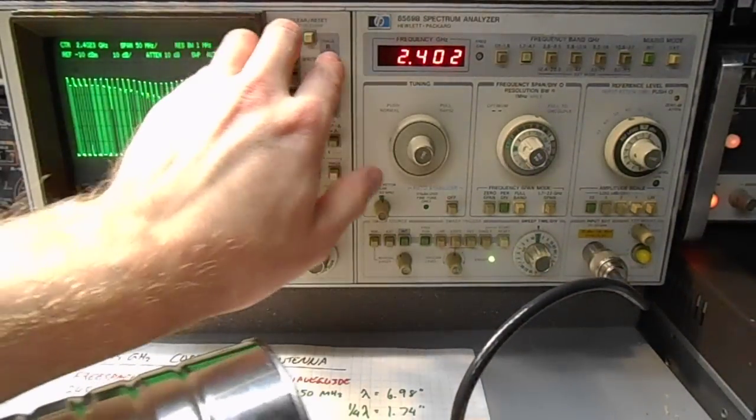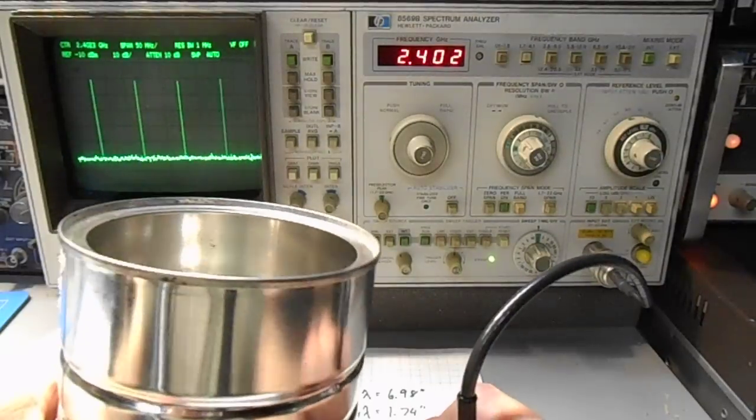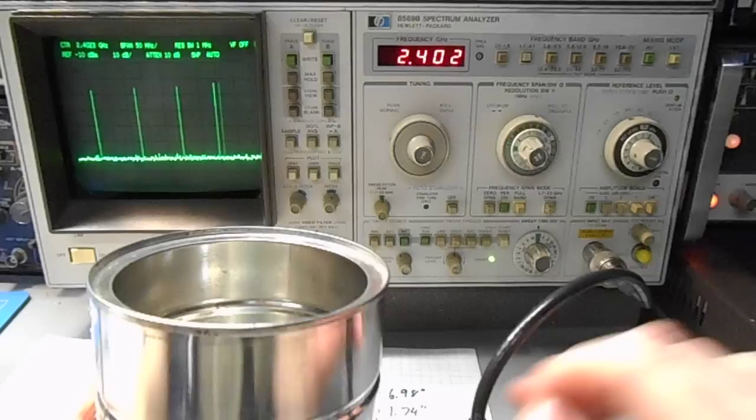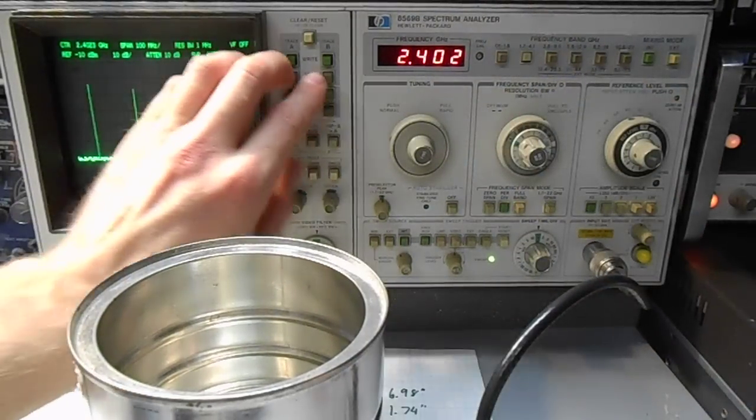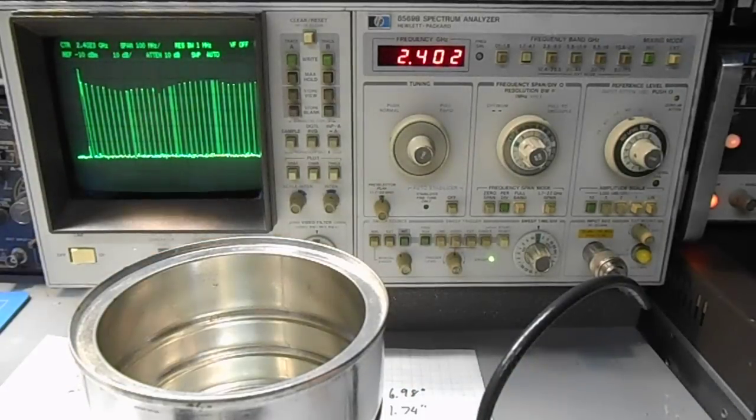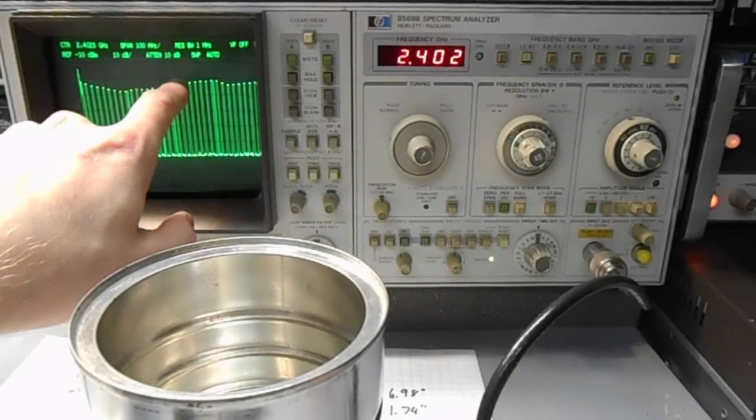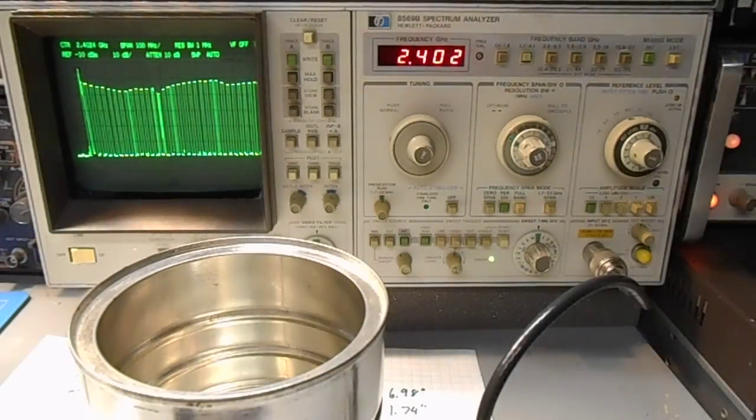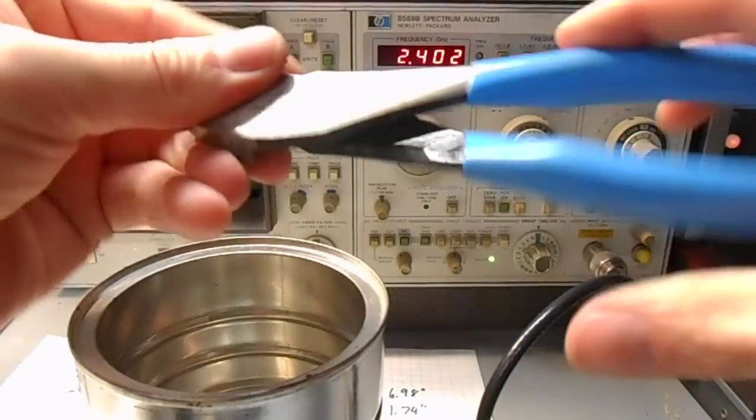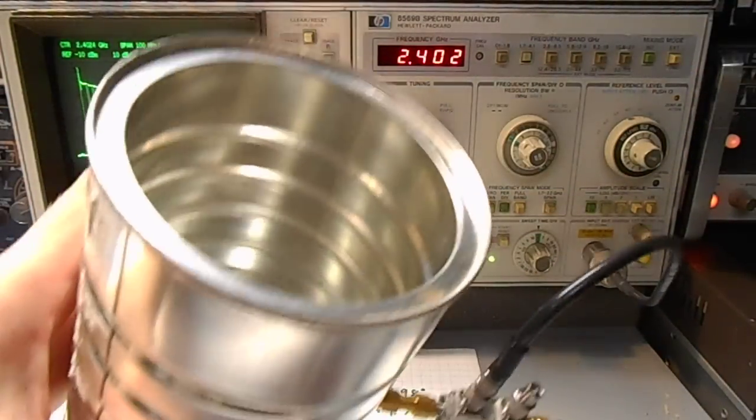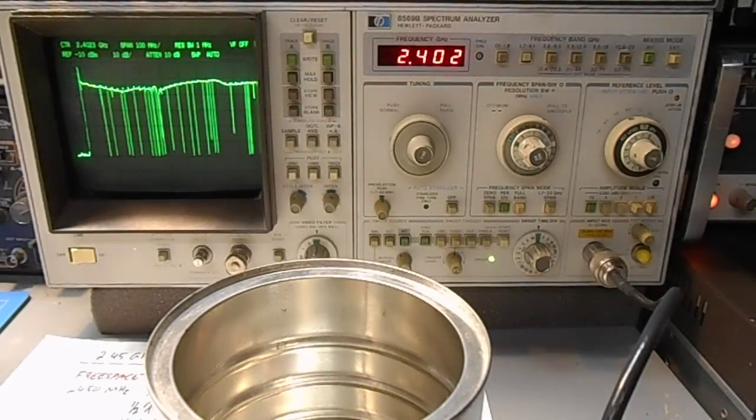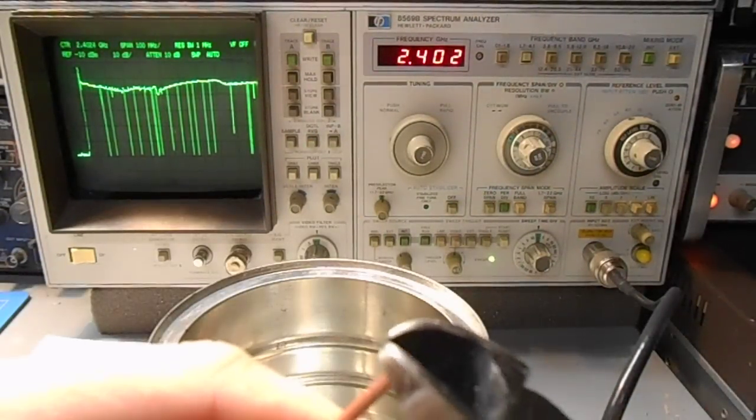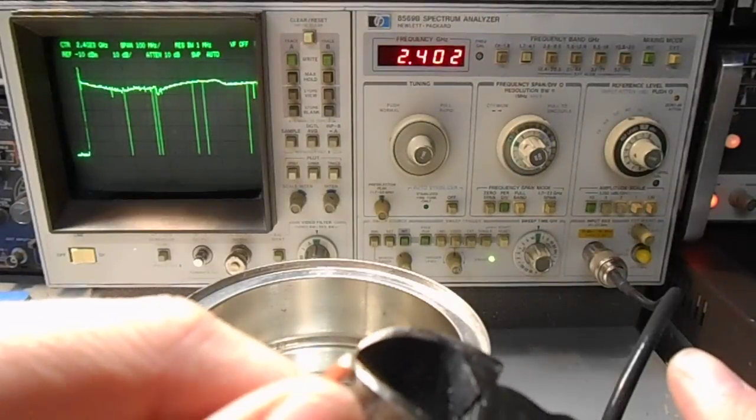Now I'll connect up one of our can antennas here. I purposely made the monopole a little too long. As you can see, pretty bad between 2.4 and 2.5. So I've got some nice cutters here. I'm going to very carefully trim the monopole copper tubing that we were using.